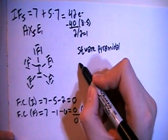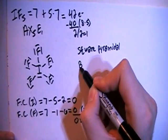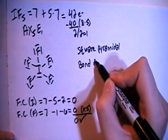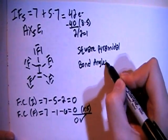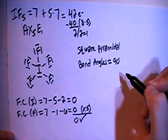Okay, and when you have this type of structure or shape the bond angles are all going to be approximately 90 degrees.